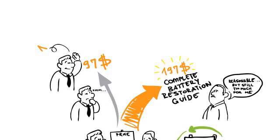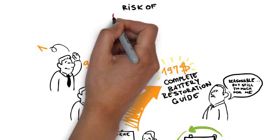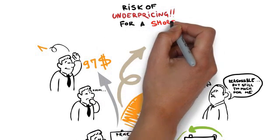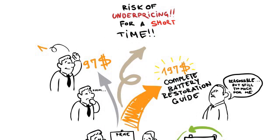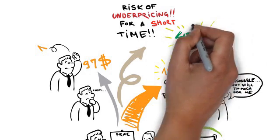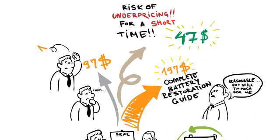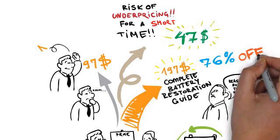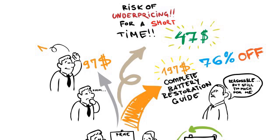And even then, it just seemed like we could be helping more people at a lower price. So at the risk of underpricing our reconditioning plans, for a short time only, we are selling the reconditioned battery guide with the free battery business guide for a tiny one-time cost of just $47. I realize this is a huge 76% discount, but it's what we feel is right.